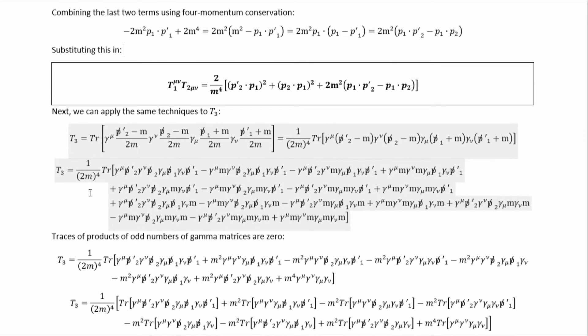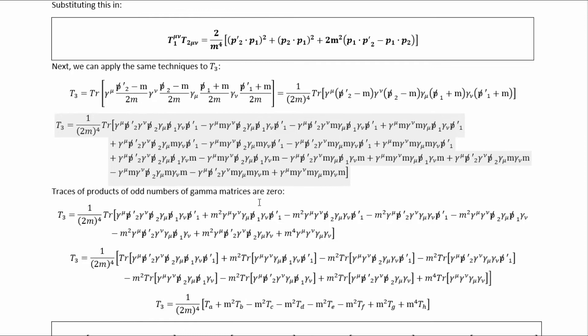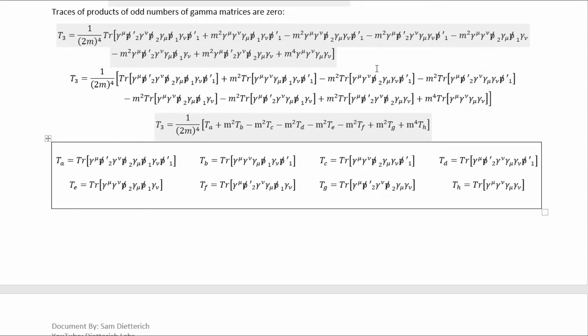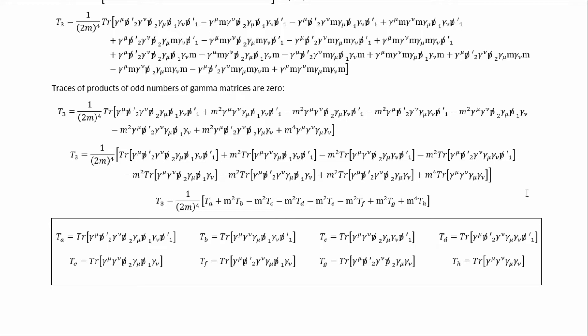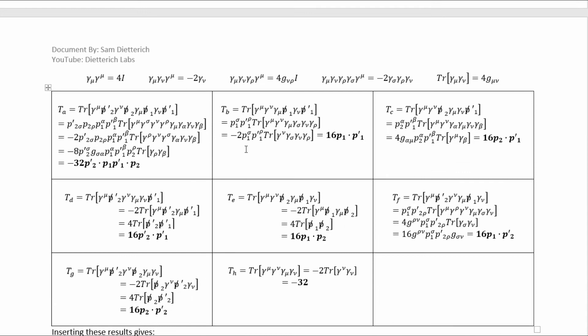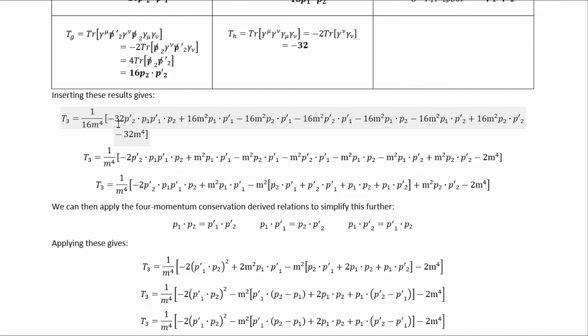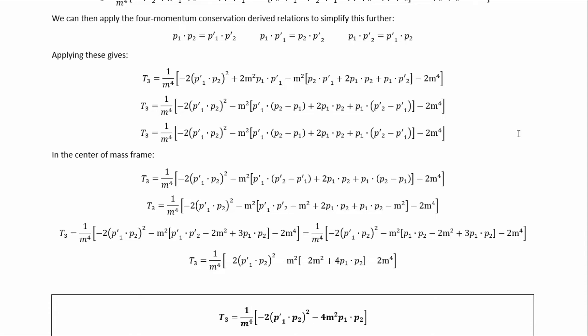The process for T3 is the same, even if it is more complicated. We pull out the denominators, multiply it out, and remember that traces of products of odd numbers of gamma matrices are zero, which simplifies things. Then we write it as a sum of terms proportional to traces and label all the traces so that we can calculate them separately. I've shown in a table how to calculate each trace that shows up, using all of the gamma matrix identities. Inserting those results into T3 and simplifying, then applying the four-momentum conservation relations and the center of mass frame, we can work it all the way down to the final result for T3.